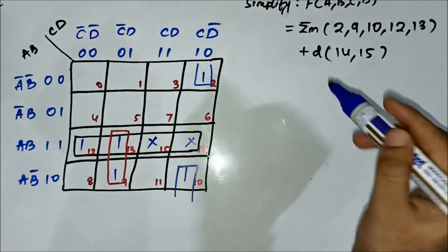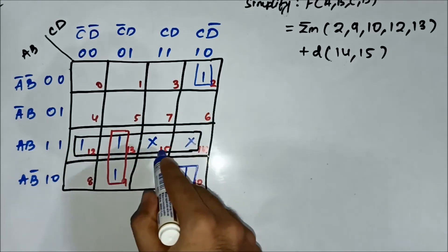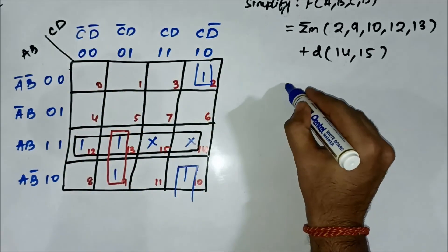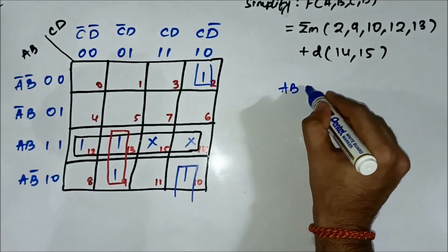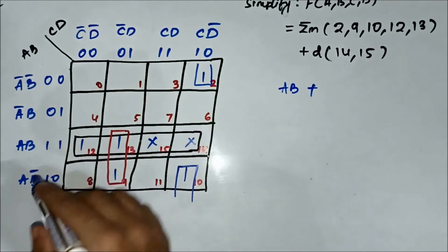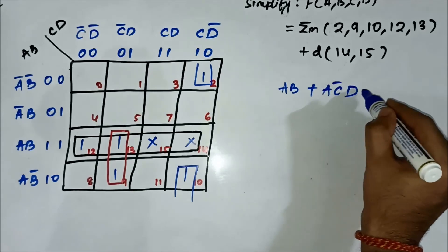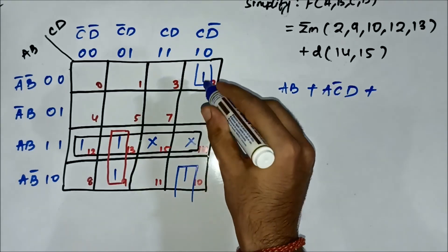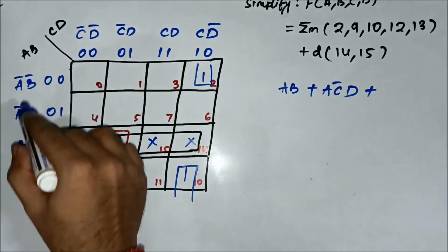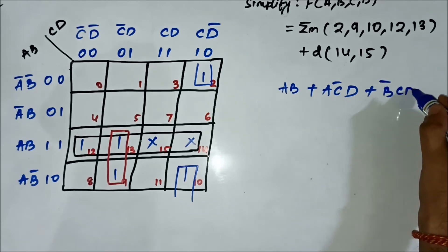Now we identify the common variables. For the quad covering cells 12, 13, 14, 15: in the horizontal side we have AB common; the vertical side has nothing — so AB. For this pair, in the horizontal side we have A common, and in the vertical side we have C̄D common — so AC̄D. For the other pair, in the vertical side we have CD̄ common, and in the horizontal side we have B̄ common — so B̄CD̄.